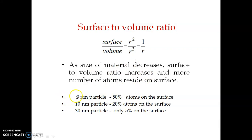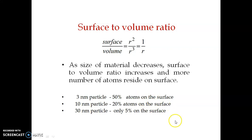If the size of the particle is 3 nanometers, 50% of the atoms will be on the surface. If the size is 10 nanometers, then 20% of atoms will be on the surface and 80% will be in the volume. And if it is 30 nanometers, then only 5% will be on the surface. This surface to volume ratio — having more atoms on the surface — has a major impact on the properties we are going to study.